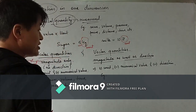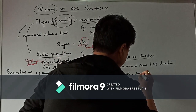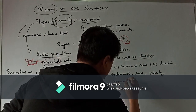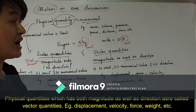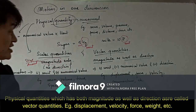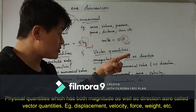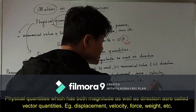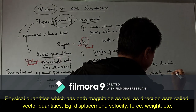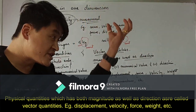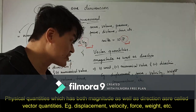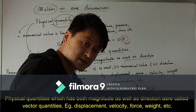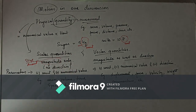Examples of vector quantities include displacement, force, velocity, and momentum. Displacement is the shortest distance between the initial and final position of the body, and it has direction. Force has direction, velocity has direction, and weight — which is the force of gravity pulling a body toward the center of the earth — also has direction. These are vector quantities.